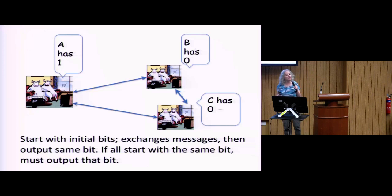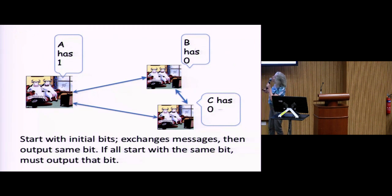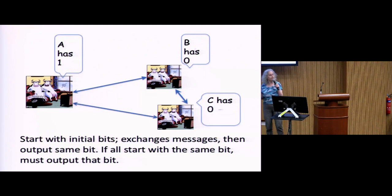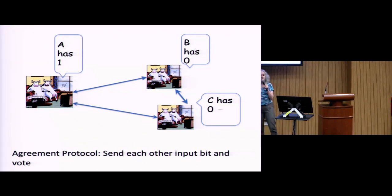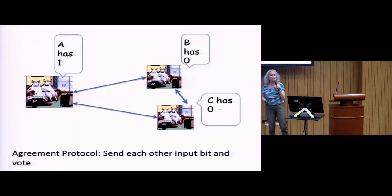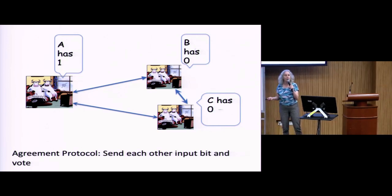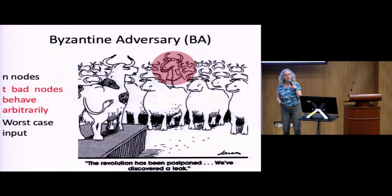Each party starts with an initial bit — either a one or a zero. They exchange messages and then decide on a bit. The decided bit must be one of the bits that one of the parties started with, so if everybody starts with a one, the decision can't be zero. They all have to decide on the same bit. One possibility is that everybody sends everybody their bit and then they vote — if they received more ones than zeros, they vote for one; otherwise zero. That would work, except we have Byzantine adversaries.